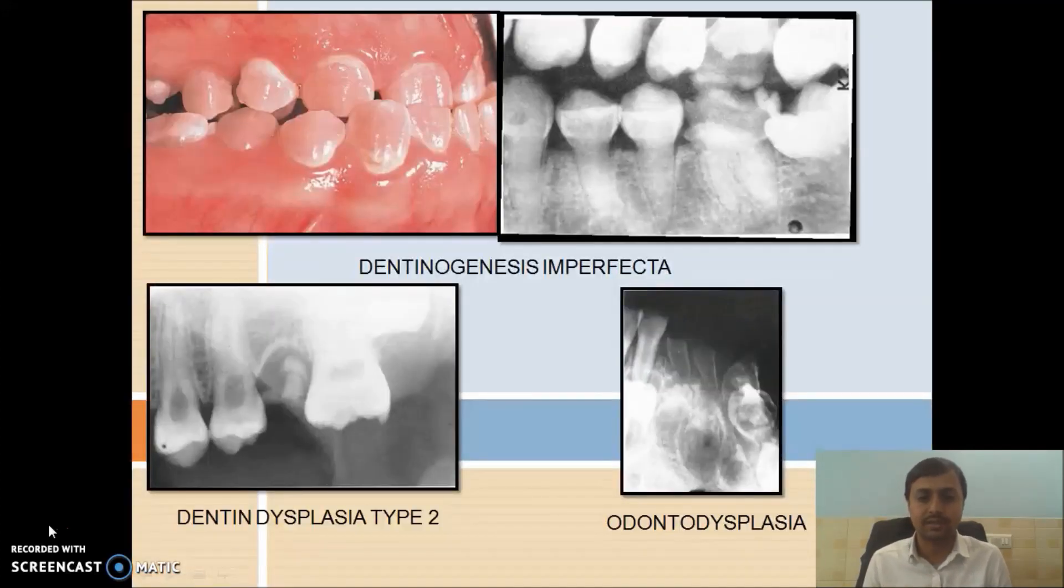Let's focus on the clinical features. See how the dentinogenesis imperfecta looks. Clinically, the teeth will have a color like dark, grayish red color will be there, or sometimes it could be brownish red also. On radiography, you can see the bulbous crown will be there. The thin dentin, large pulp chamber will be there. In dentin dysplasia type 2, I told you thistle tube appearance. This is the classical picture of thistle tube here. On radiography, see how the thin enamel, dentin, cementum is there, and large pulp chamber. It looks like a rogue seed.